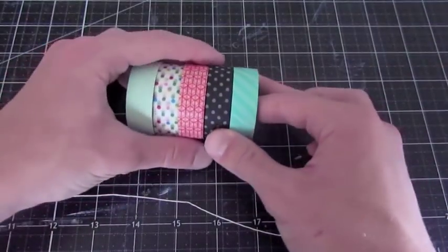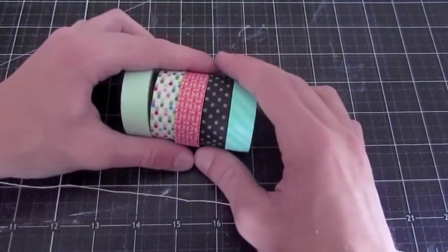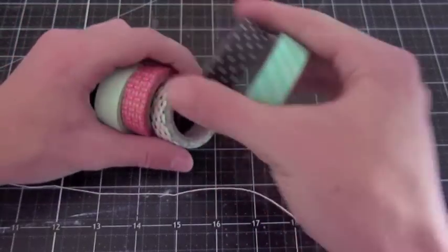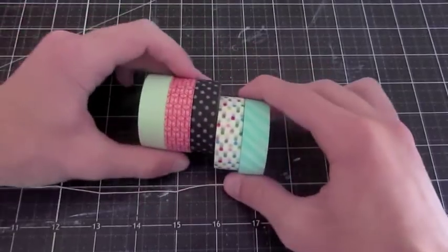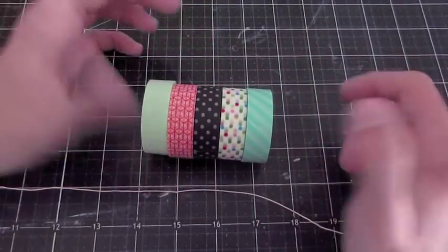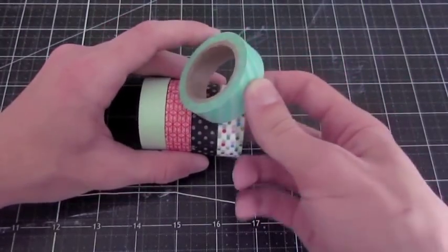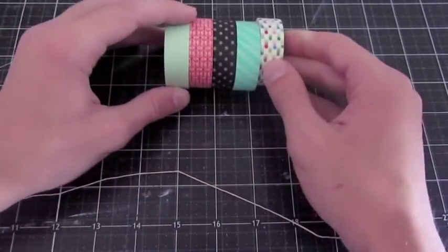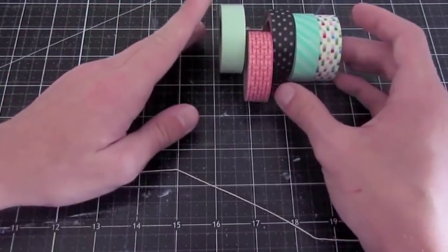But to start off this little DIY project, you're going to choose the pattern in which you want your washi tape to go. I want the polka dots to be separated, so I want to do something like this. Actually, no, I want to split this once more, so I'm going to do it like that. So this is the pattern I want my washi tape to go in, and I'm going to set it off to the side.